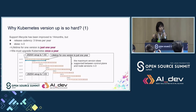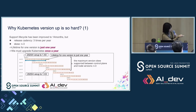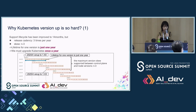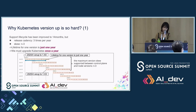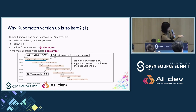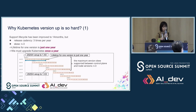Why is Kubernetes version upgrade so hard? The current Kubernetes support lifecycle is 14 months — improved from nine months — but it is still not long enough. The release cadence is three times per year, and the maximum version skew supported between the control plane and node version is N-minus-3. This means a lifetime for one version is just one year, so we must upgrade Kubernetes once a year, which is a bit too frequent for us.